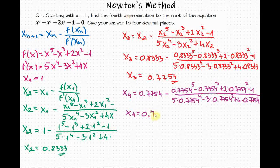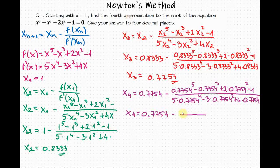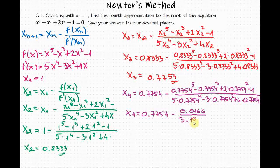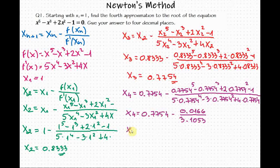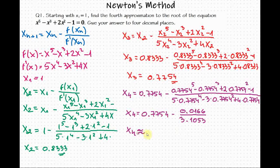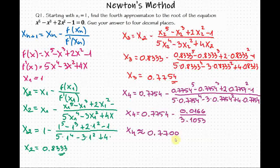So we have 0.7754 minus a value of 0.0166 divided by 3.1053. So after 4 iterations, we have got the approximate solution of x sub 4 equal to 0.7700.